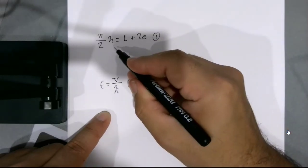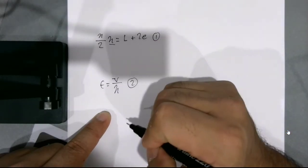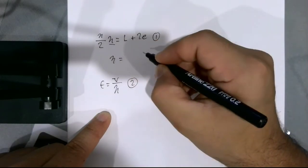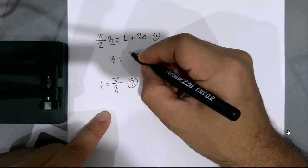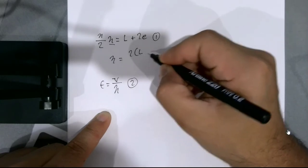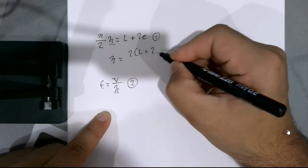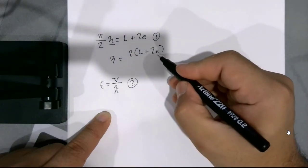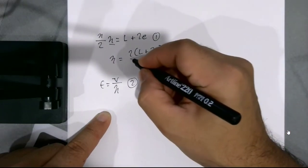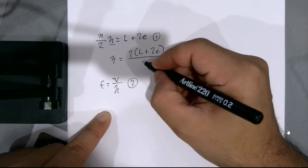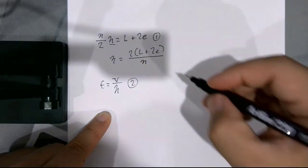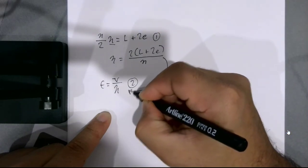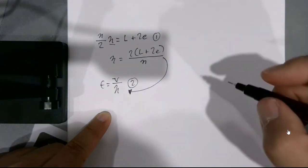And again, we rearrange this for our wavelength, which is lambda. So we find out that lambda is equal to two times the length plus two end corrections divided by the nth harmonic. And what we're going to do is substitute that in there all the way to the bottom. So let's do that.